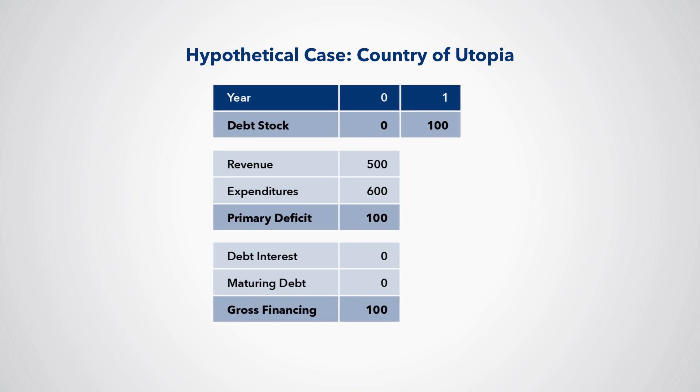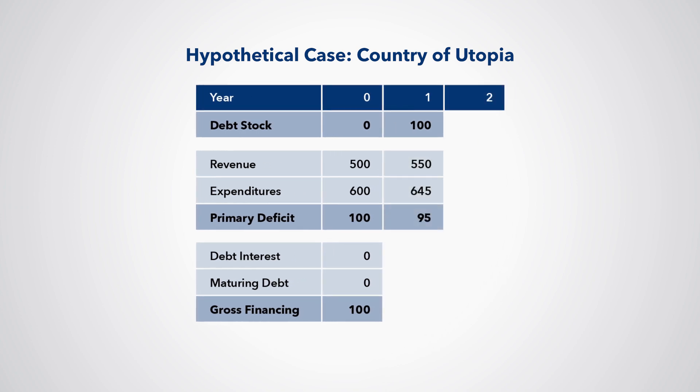In year two, the primary deficit is 95, based on revenue and expenditures. Plus, there is now debt interest of five to pay. So it issues another five-year bond of 100 at a 5% interest rate, creating another new debt flow and increasing the stock to 200.